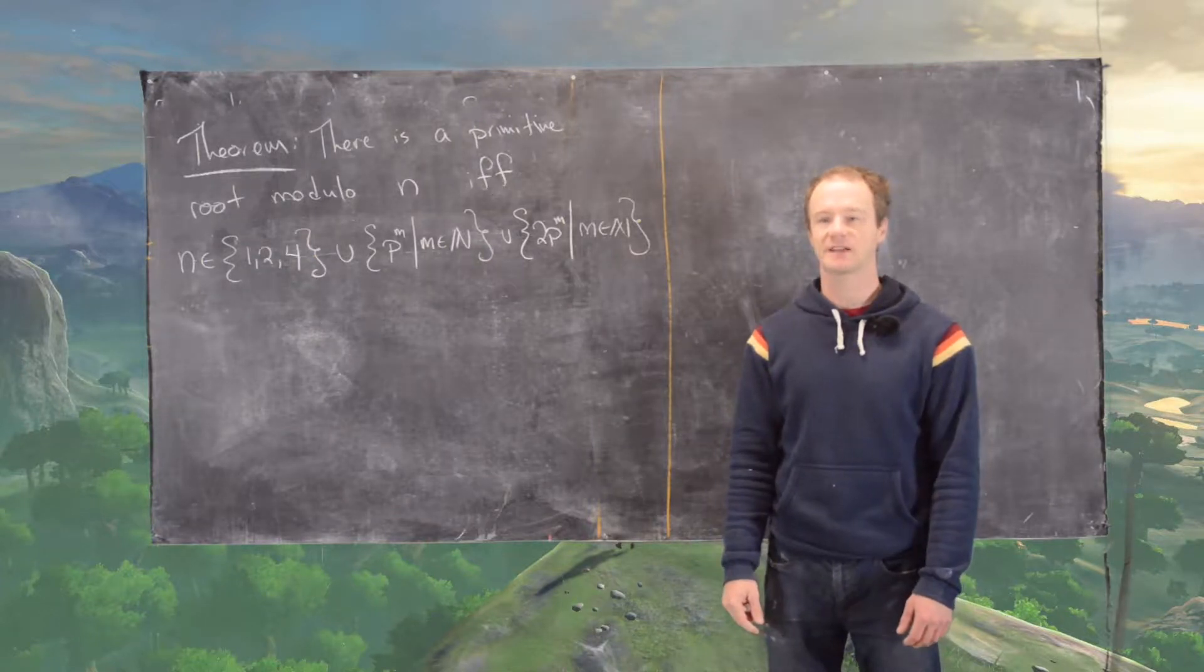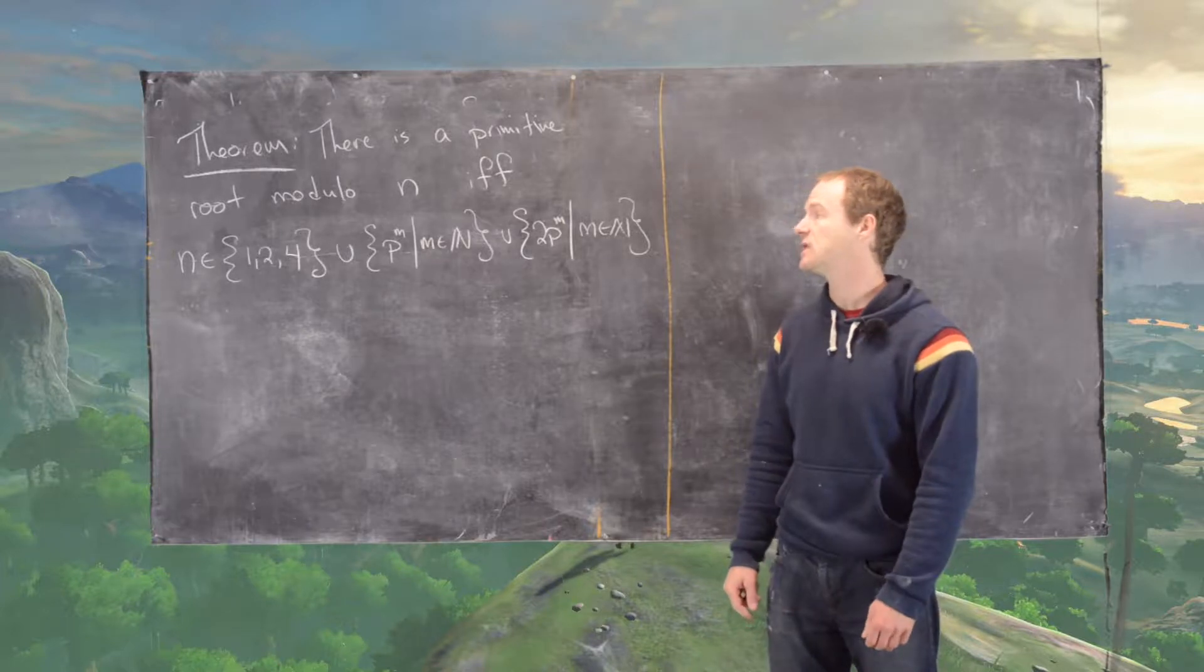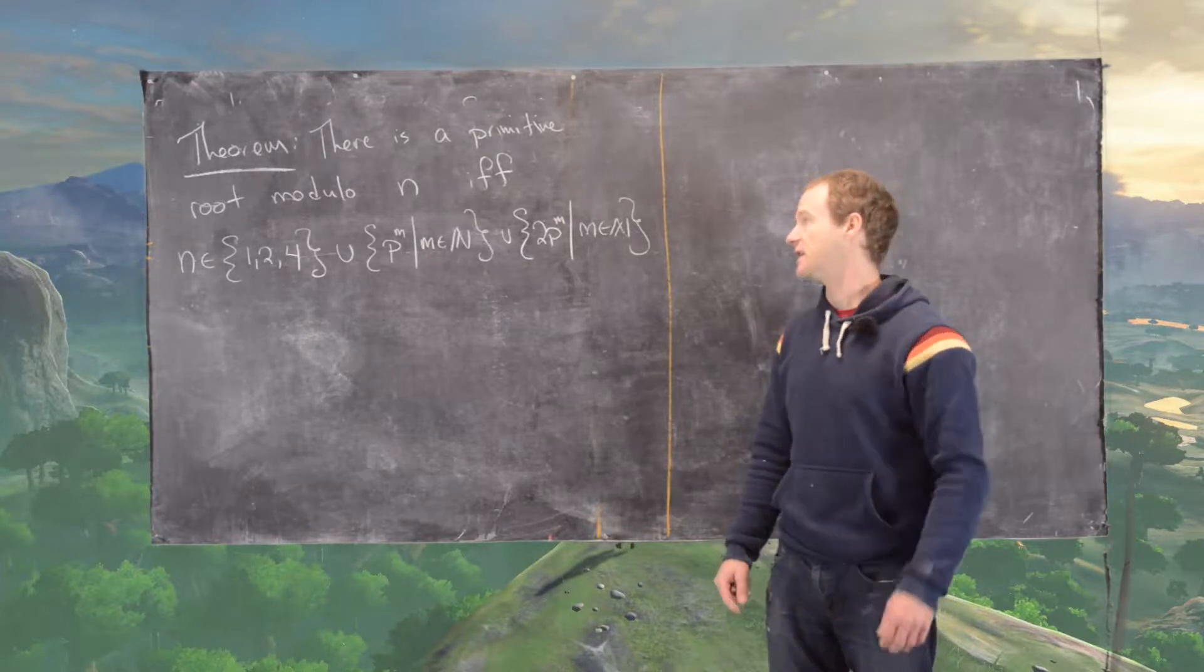Okay, we're finally ready for a classification theorem for which natural numbers have primitive roots and which don't. And it is as follows.